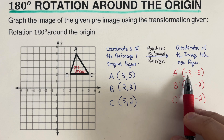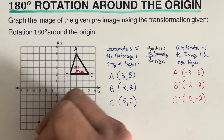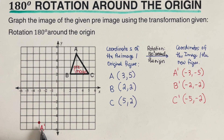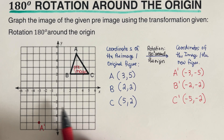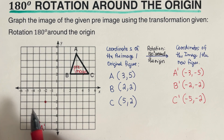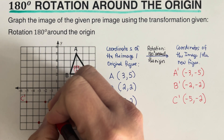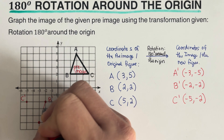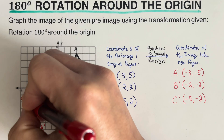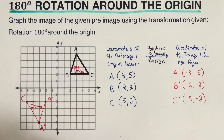A prime is at (-3, -5) — that's negative 3 across and down to negative 5. B prime is at (-2, -2) — plotted right here. C prime is at (-5, -2) — that's negative 5, negative 2. We then connect these points to create the triangle. This new triangle is our image after rotating 180 degrees around the origin.